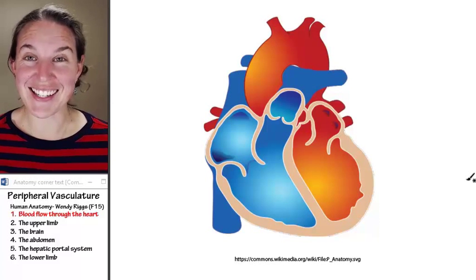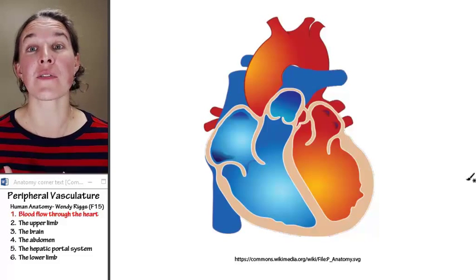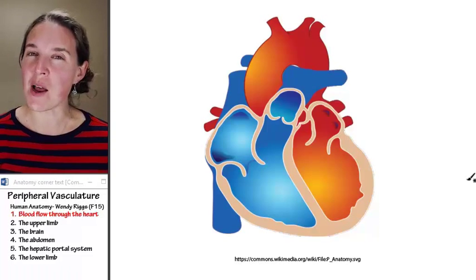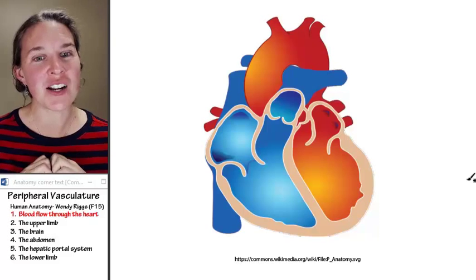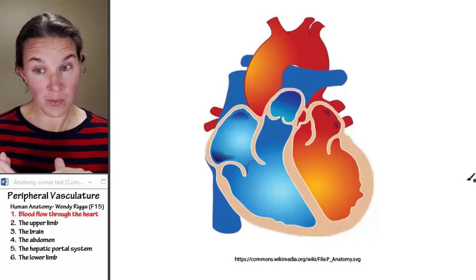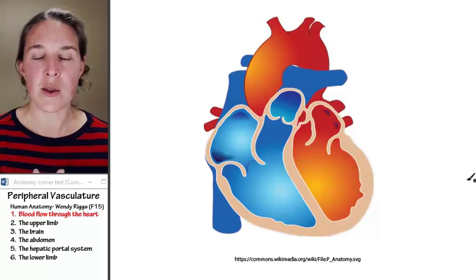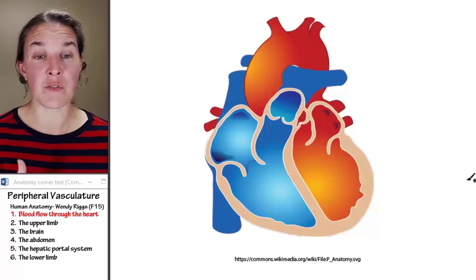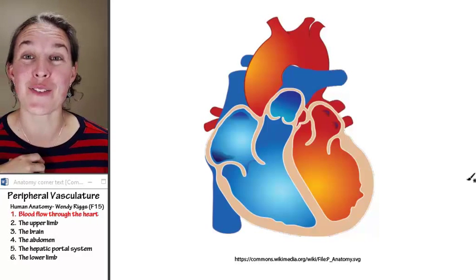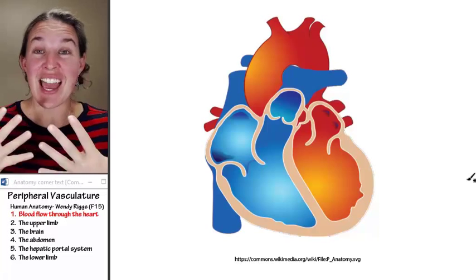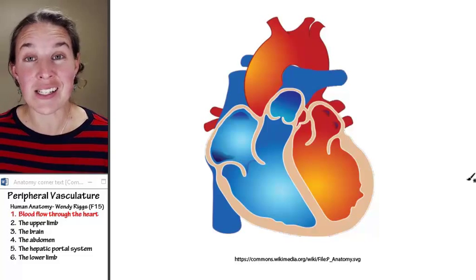Hello, my little cute hearts. Today we get to capitalize on all the cardiovascular stuff that we've done so far. We've talked about blood, we've talked about vessels in general, we know all the different kinds of vessels that we have, and we've talked about the heart in detail. Today we're going to fill in the vessel pathways or highways that will take blood to every single part of your body so that you can have gas and nutrient and waste exchange in the organs and in the tissues.